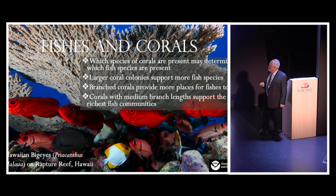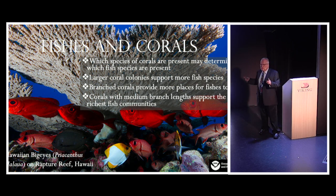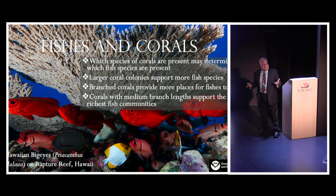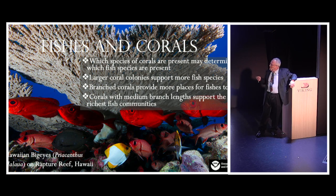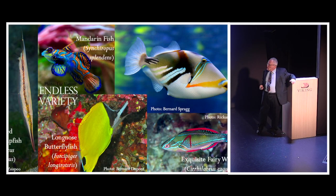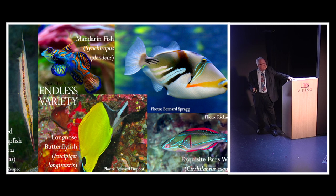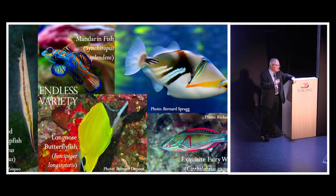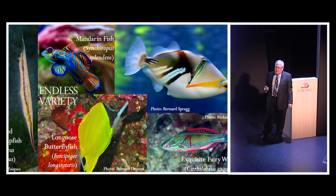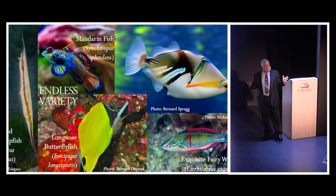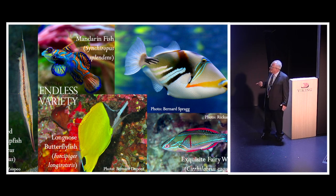They've also found that corals with medium branch lengths actually support more kinds of fish than ones with long or short branch lengths — exactly why isn't precisely clear, but that's the finding. The variety of shapes, sizes, and colors of fishes on the reef far exceeds what you'll find in the open ocean or other habitats.